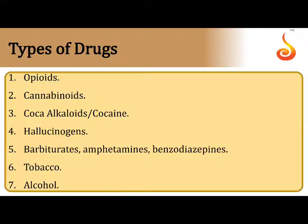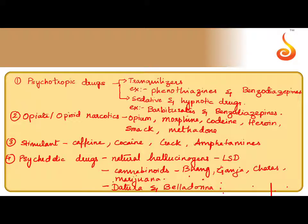Some of the types of drugs that NCRT prescribes are opioids, cannabinoids, coca-alkaloids that can also be called cocaine, hallucinogens, barbiturates, amphetamines, benzodiazepines, tobacco, and alcohol. Out of these, we are going to broadly take four bigger categories of drugs which we categorize as psychotropic drugs.